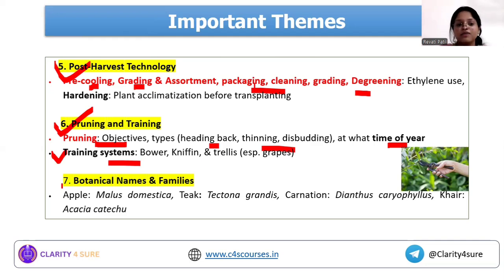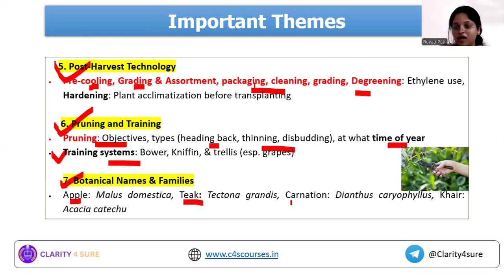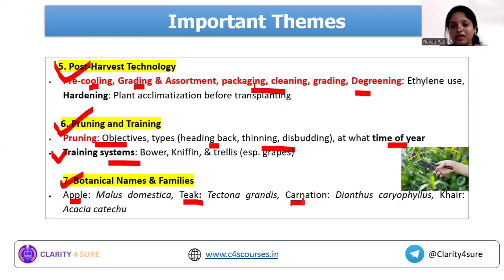Next is botanical names and families. There is no particular theme followed here, but botanical names for apple, teak, and carnation were asked in PYQs. For non-agriculture students, you can leave this part.